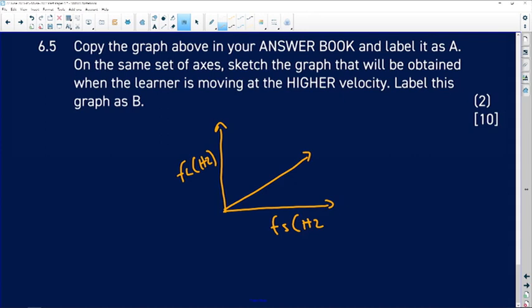Now this was my first graph. This was not there on the graph. And therefore, what we can do now is this. We want to know how will the graph of B look like here on our graph. So what we need to do here is this. It says that it was moving at a higher velocity. So higher velocity, it means that the frequency is going to increase. The frequency will increase.